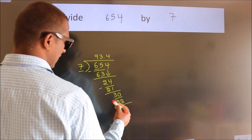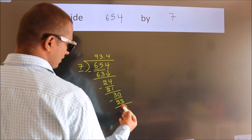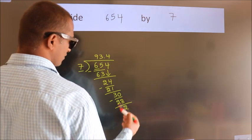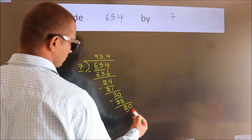Now we subtract. We get 2. After this we already have the decimal. So directly take 0. So 20.